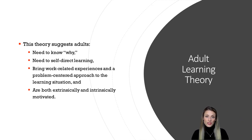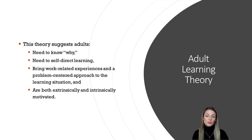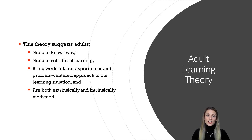Adult learning theory is a newer theory that attempts to explain how adults learn. It suggests that we have a need to know why and a need to drive our own learning process. It also suggests that adults differ from children in that they bring a problem-centered approach to the learning environment and draw upon their unique work experiences — experiences that children typically don't have. This theory also suggests that adults are motivated both internally and externally.